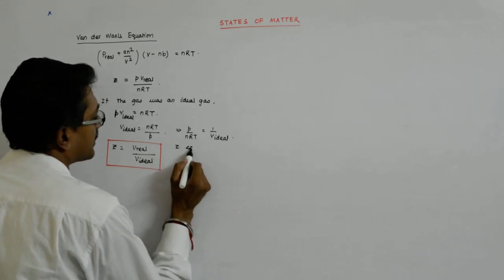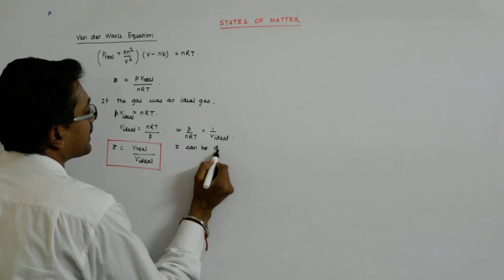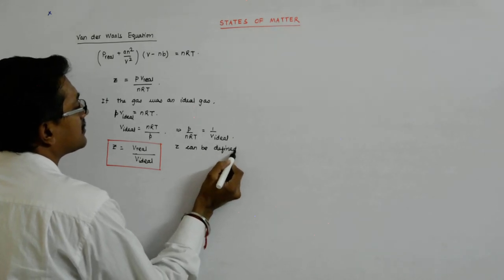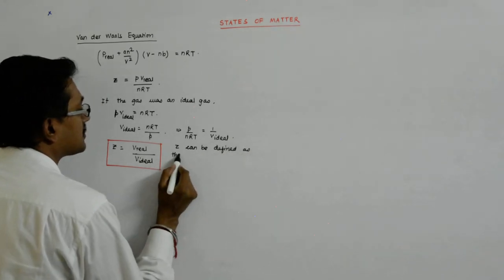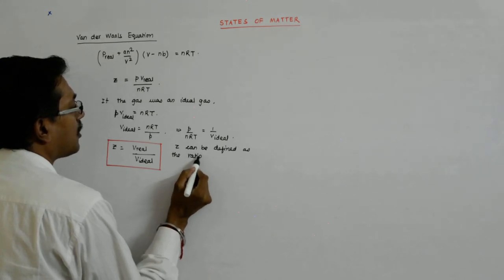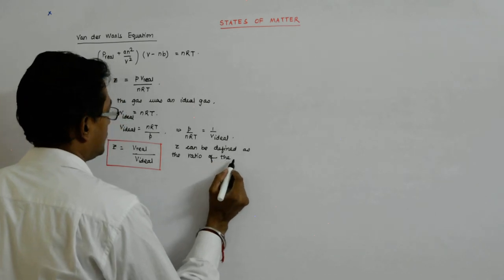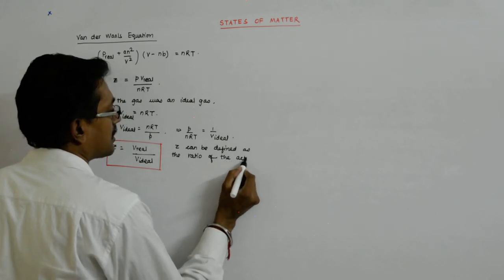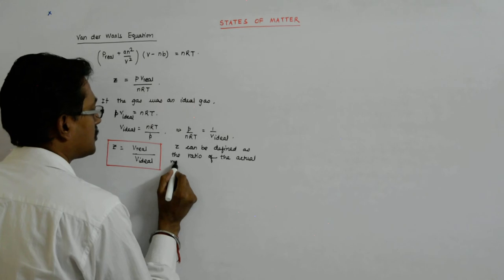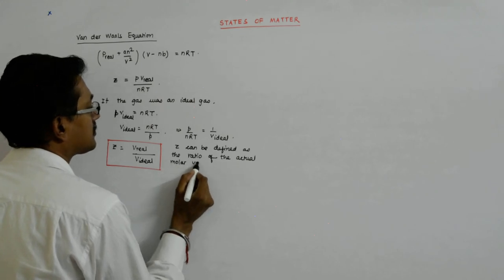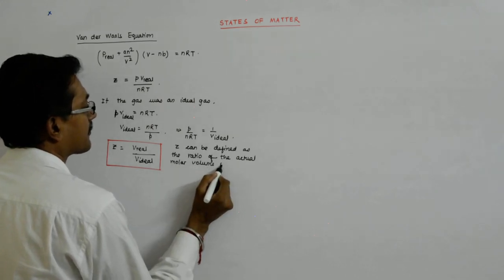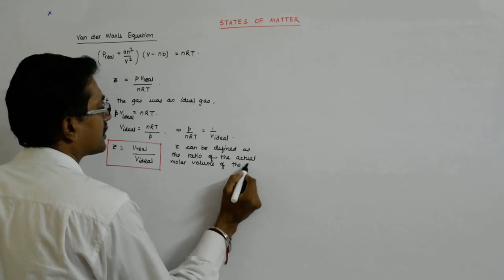Z can be defined as the ratio of the actual molar volume of the gas